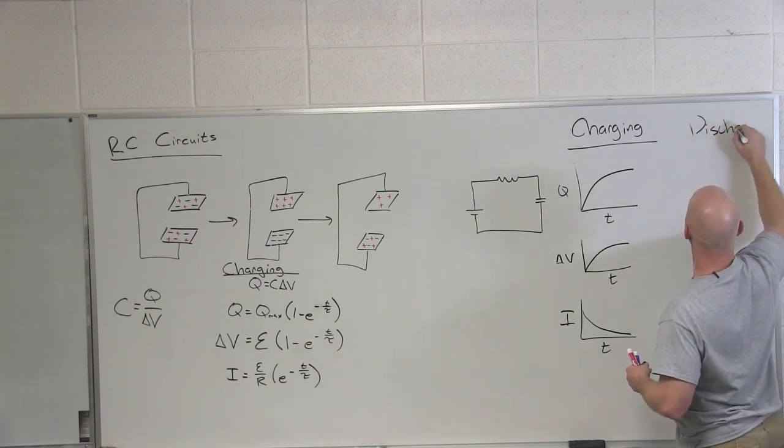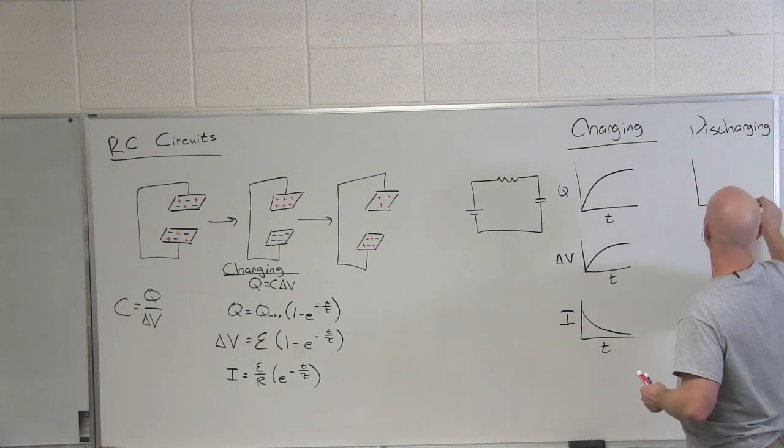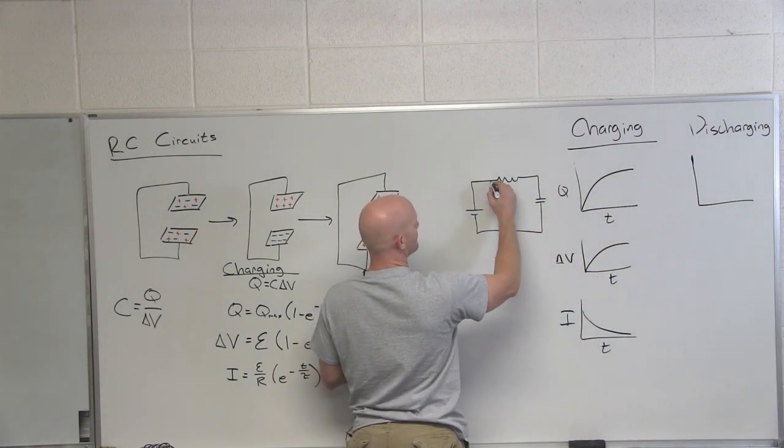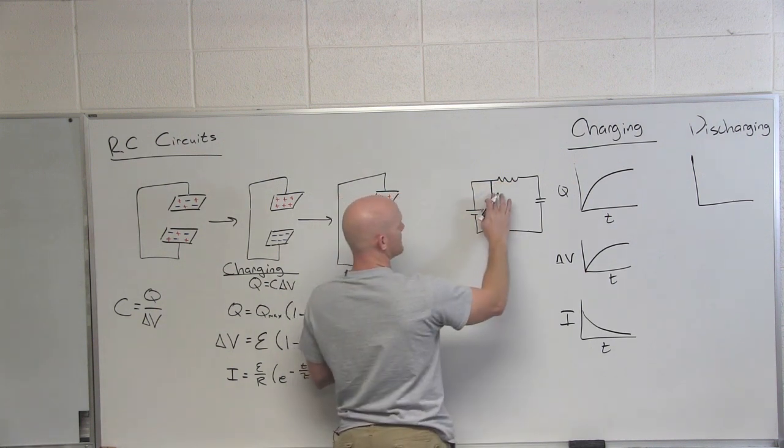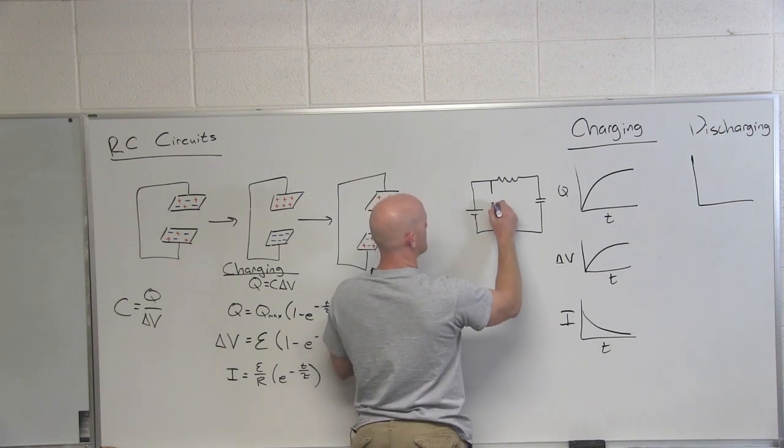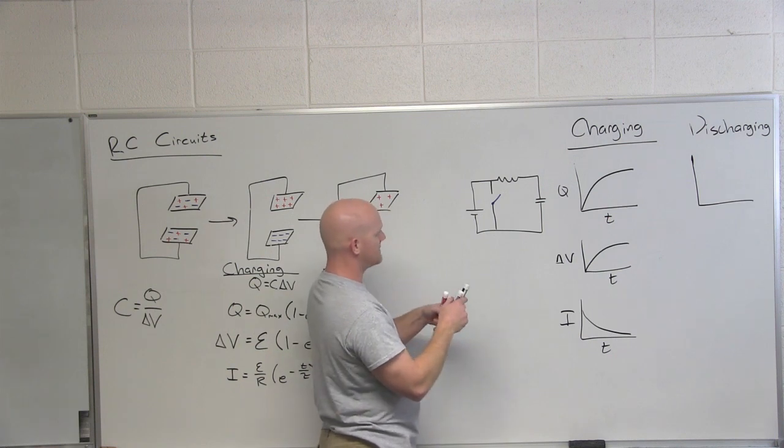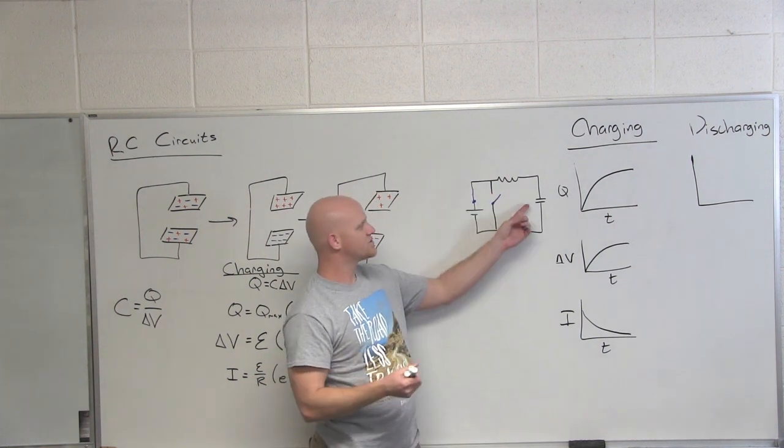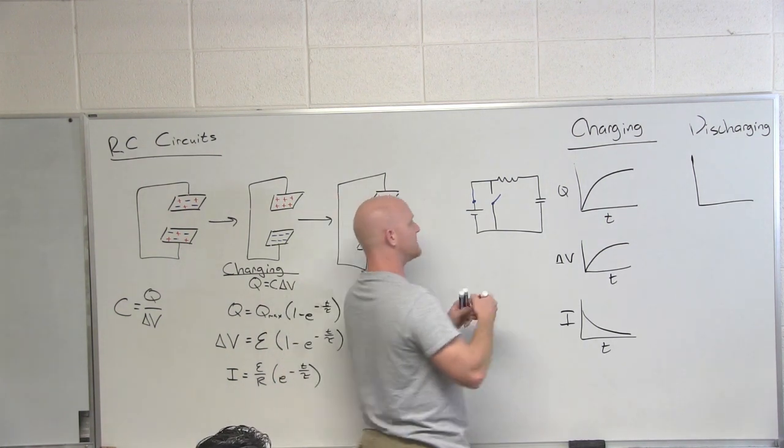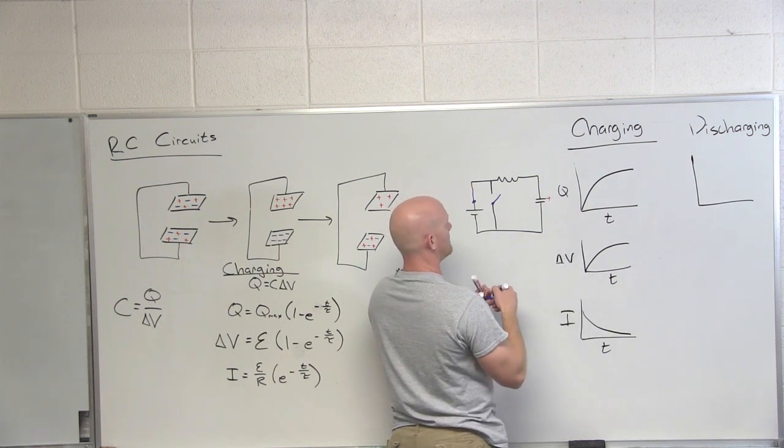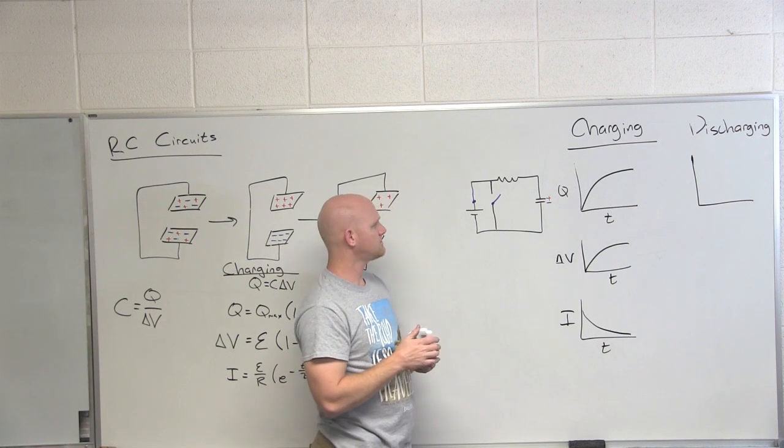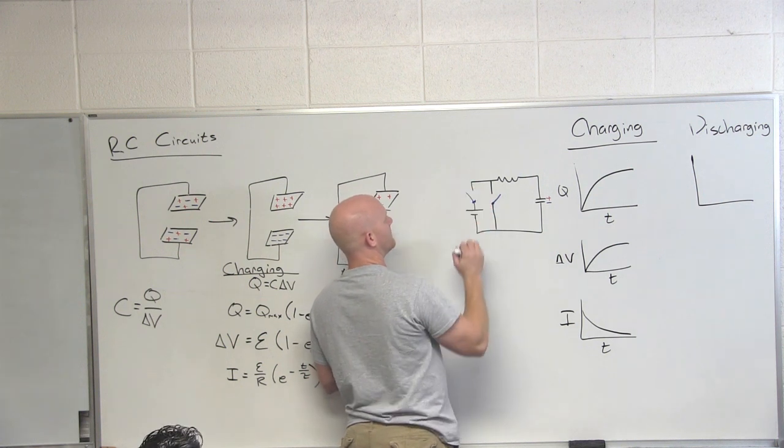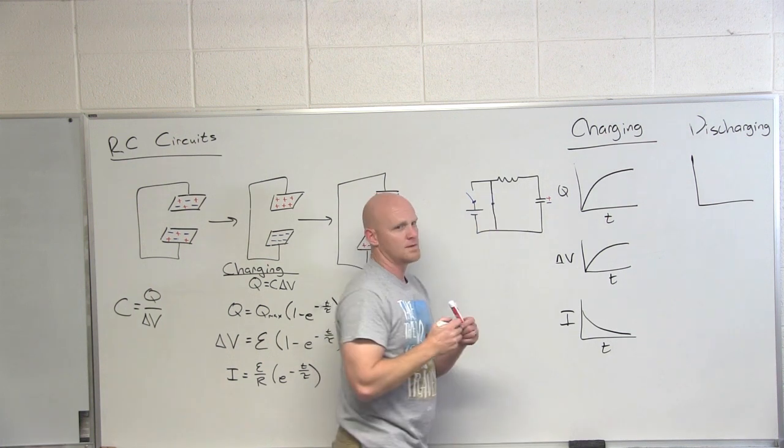So that's charging. We'll take a look at discharging here as well. So the way this circuit might work is maybe we have another pathway on this circuit right here, let's say. And let's say that it has a switch and that switch is open. And let's say we also have another switch in our circuit connecting the battery in that's closed. And this is how we could charge up our capacitor.